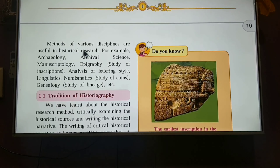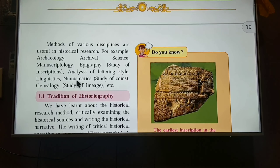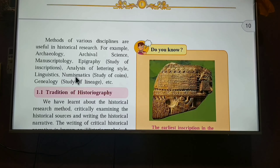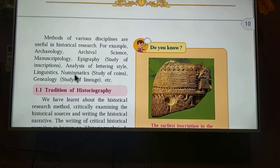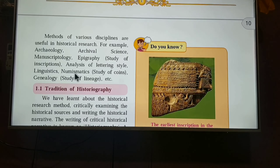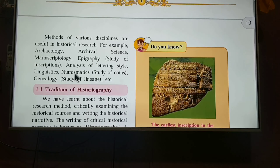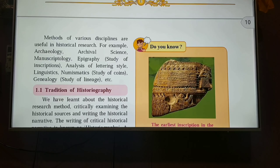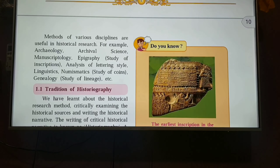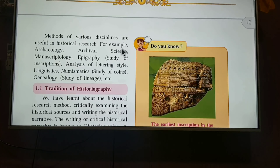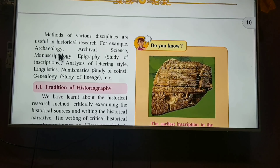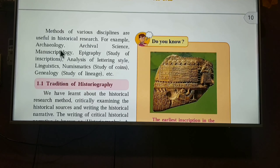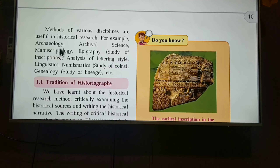Look at the various methods or disciplines used in historical research. For example, archaeology is the study whereby things are dug from underground. Archival science refers to buildings where all records and documents are stored. Manuscriptology is the study of scripts that were written in the past and are deciphered later by historians. Epigraphy is the study of inscriptions found on various things and documents.